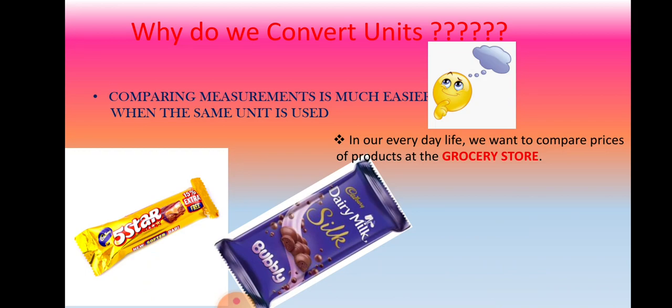You know about currency, right? We use rupees in India and naira in Nigeria. All the things in the supermarket are mentioned in naira, so it is easy for mama to compare. But if some things are in rupees and some in naira, can we compare? Like if the cost of a 5 Star is 15 rupees and the cost of a Dairy Milk is 500 naira — can you compare which one is costlier? No, it is not easy because one is in one unit and the other is in a different unit. So we cannot compare.